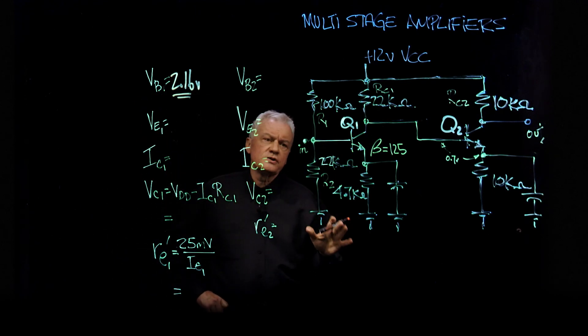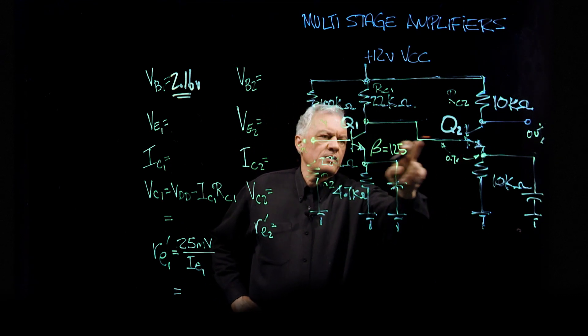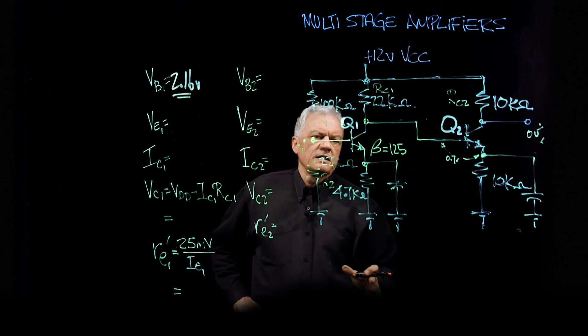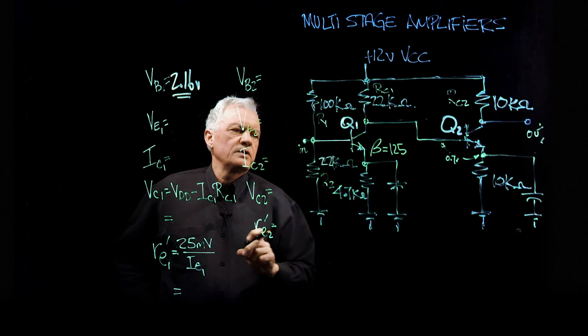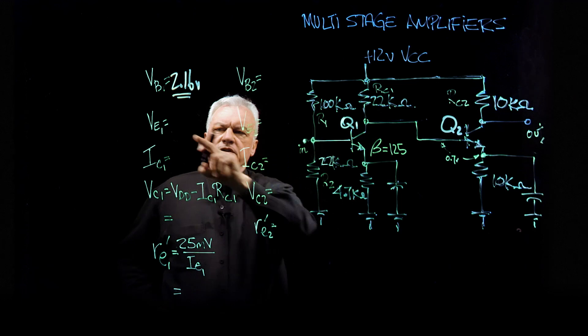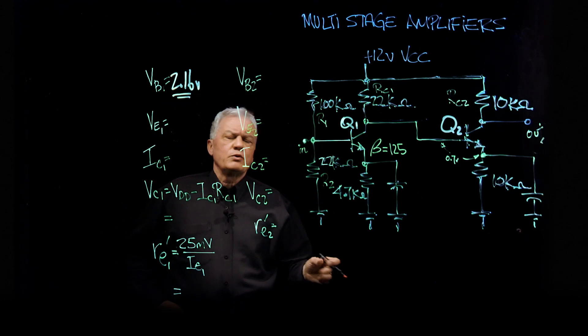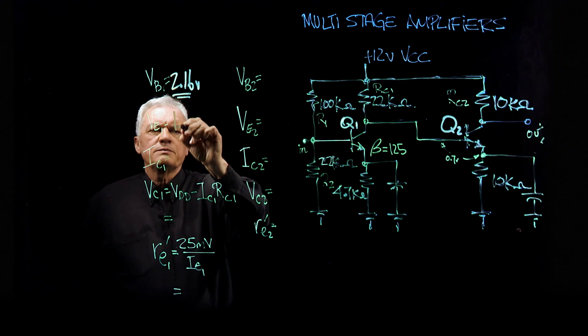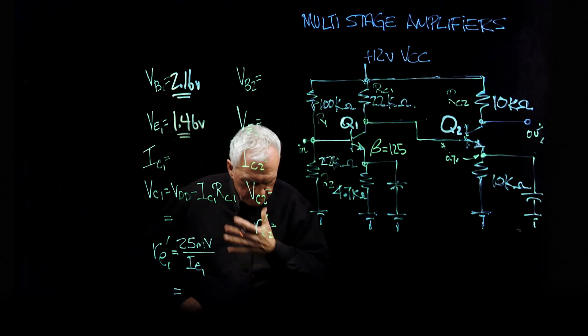Now, as you know, there is a 0.7 volt drop across this base-to-emitter junction. And so if the base voltage is 2.16, then the emitter voltage for E1 is going to be 2.16 less 0.7. And that's basically 1.46 volts.